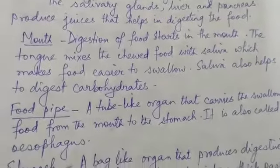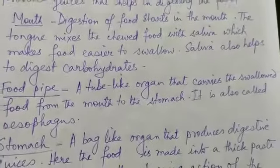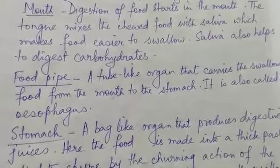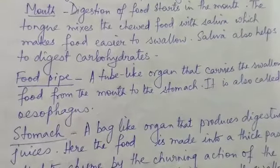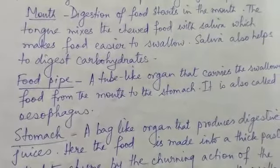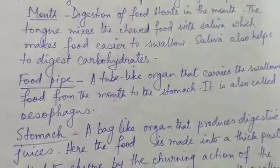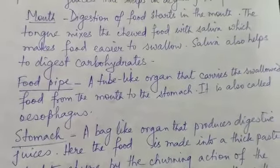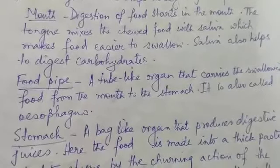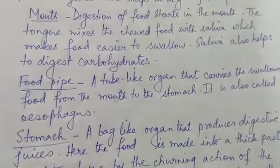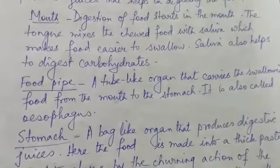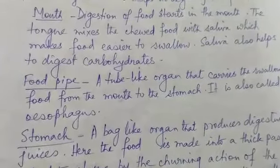The next organ is the food pipe — a tube-like organ that carries the swallowed food from the mouth to the stomach. It is also called the esophagus. No digestion takes place in the food pipe.